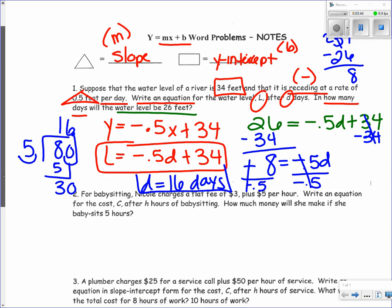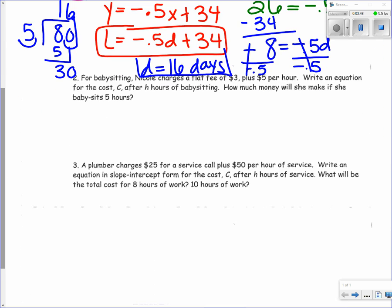For babysitting, Nicole charges a flat fee of $3 plus $5 per hour. Write an equation for the cost C after H hours of babysitting. How much money will she make if she babysits for 5 hours?